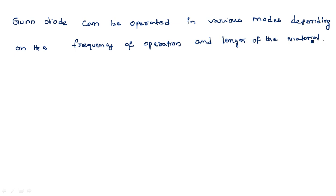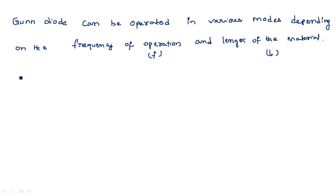The operation of the Gunn diode depends on two main important factors: one is the frequency of operation f, and the other is the length of the material l — that is, the length of the Gunn diode.